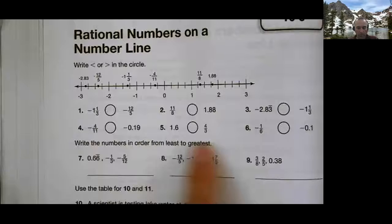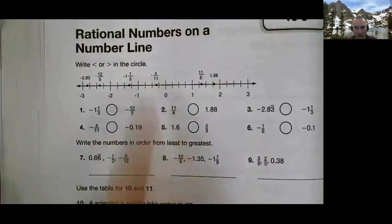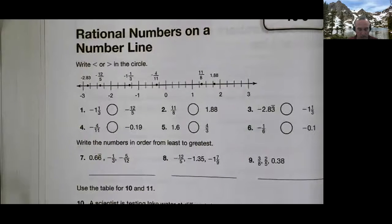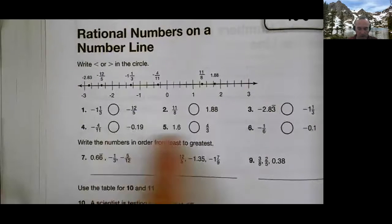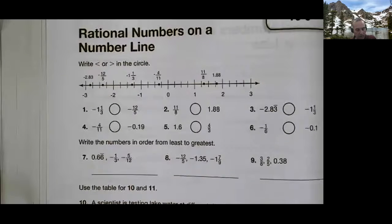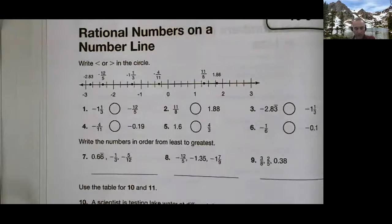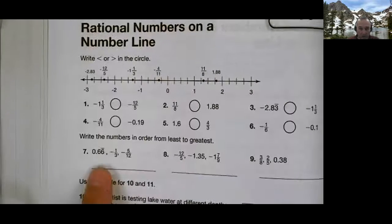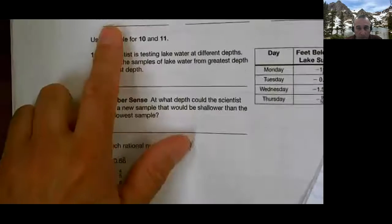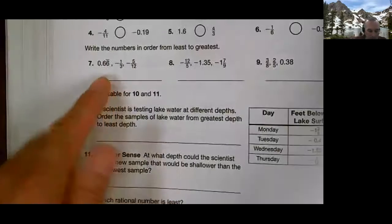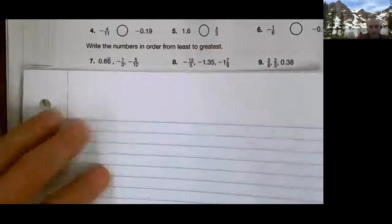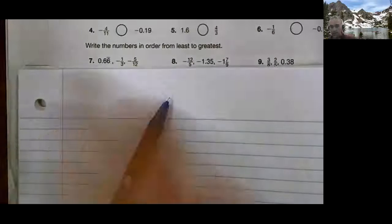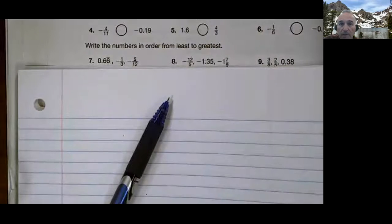So I'd like you to do four, five, and six. They are not on the number line. So you'll have to do it with good old fashioned math. Let us look at number seven. Here it is. I'm going to copy them down. Let me pause our video.